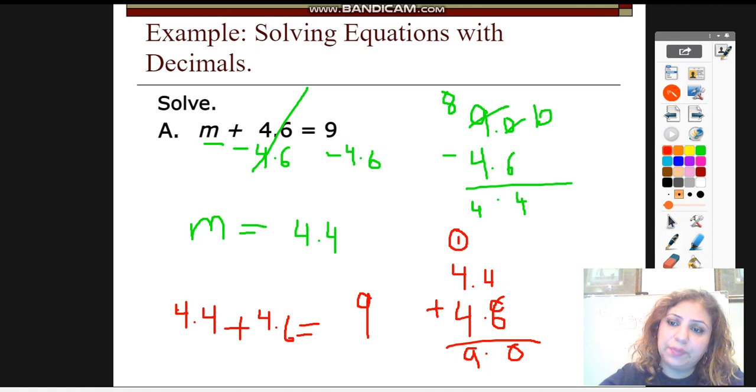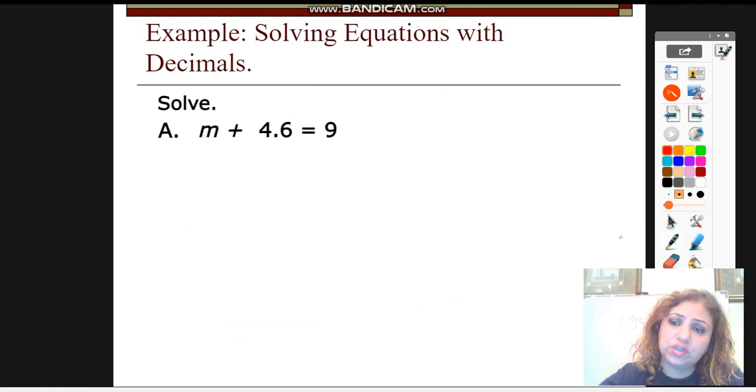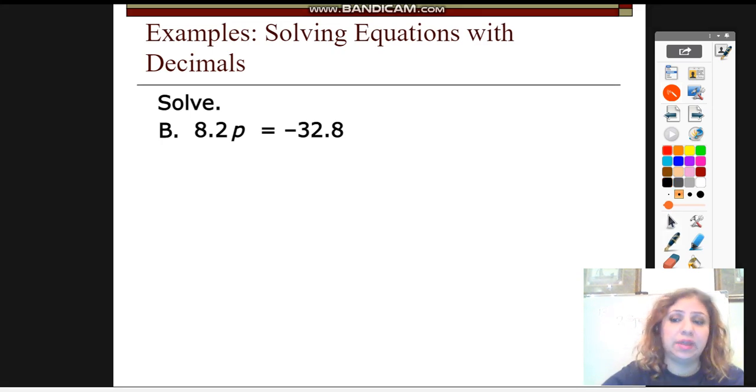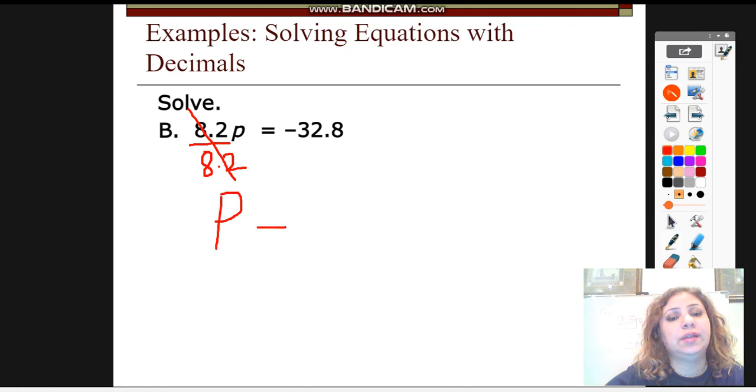Let's have another example. Solving equation that involves rational number. This is a multiplication equation. Whenever you don't have a sign between the variable and the number, that means it is multiplication. I need to undo multiplication. How? Using inverse operation of multiplication, which is division. That means you will divide both sides by 8.2. This way, I will get the p isolated. I'm going to get it on one side, alone at one side. And divide this by 8.2 also.